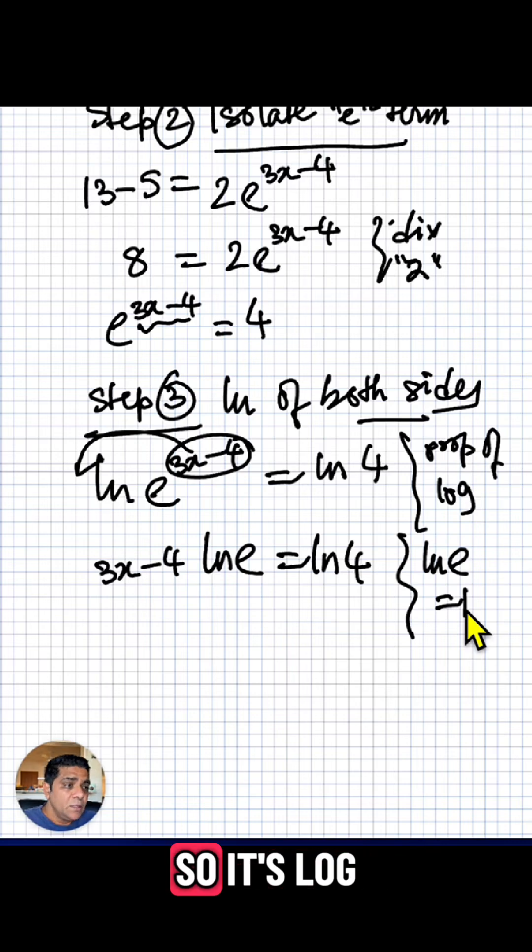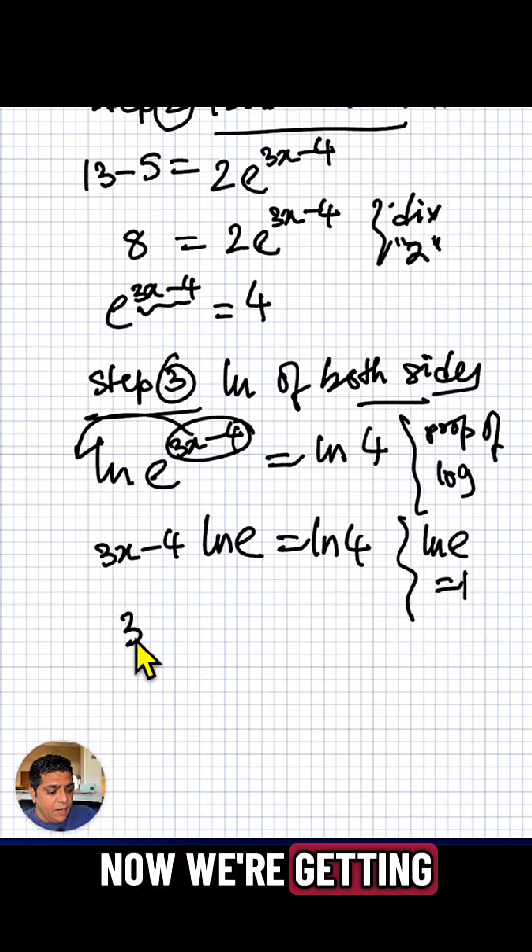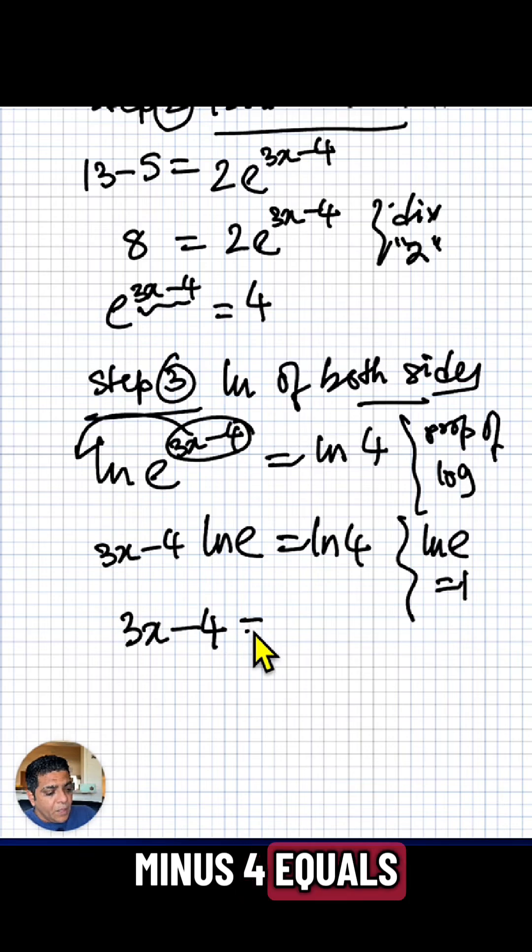Now remember ln e equals 1. That's the natural logarithm, log base e of e, which is equal to 1. So we can just write 1 instead. Now we're getting to the x value: 3x minus 4 equals ln of 4.